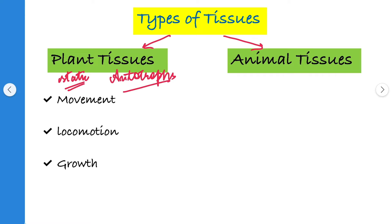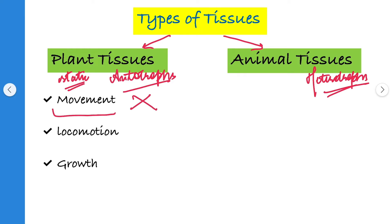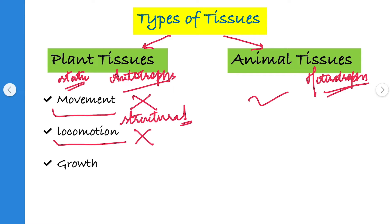Animal tissues are heterotrophs, meaning they depend on other animals to obtain their food. So in plant tissues there is no requirement of movement, because they are static — they just need structural support to stand still. In animal tissues there is a requirement of movement, because they have to make their food. In plant tissues there is no requirement of locomotion, whereas in animal tissues there is a requirement of locomotion.